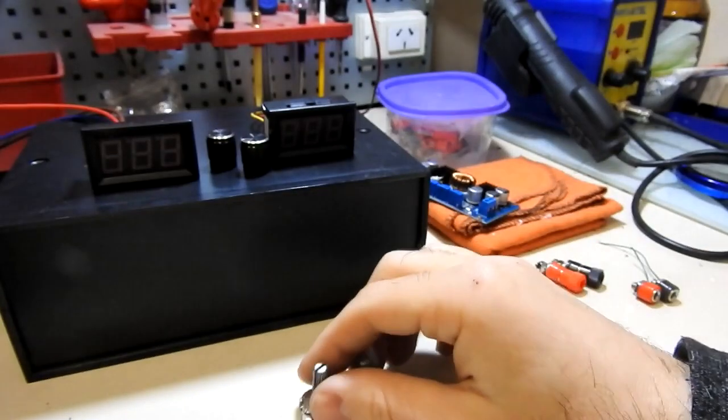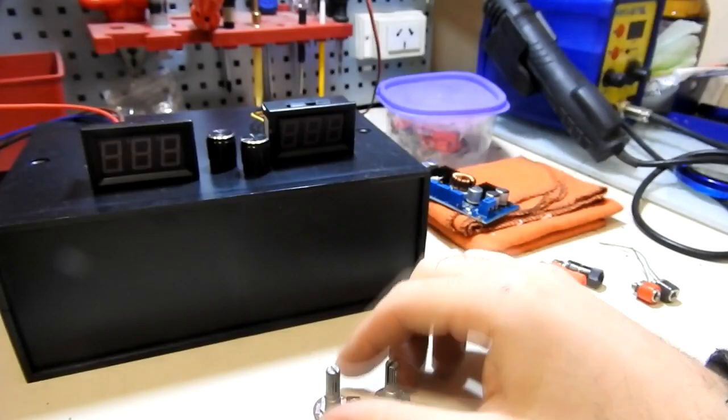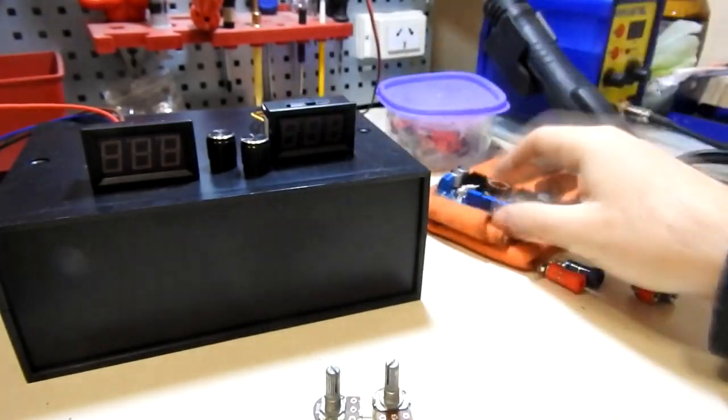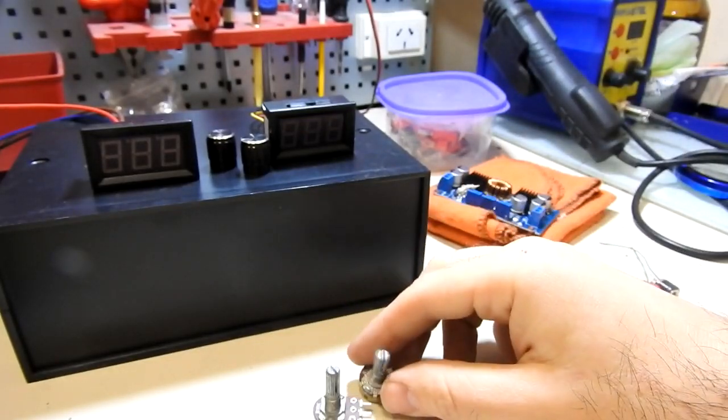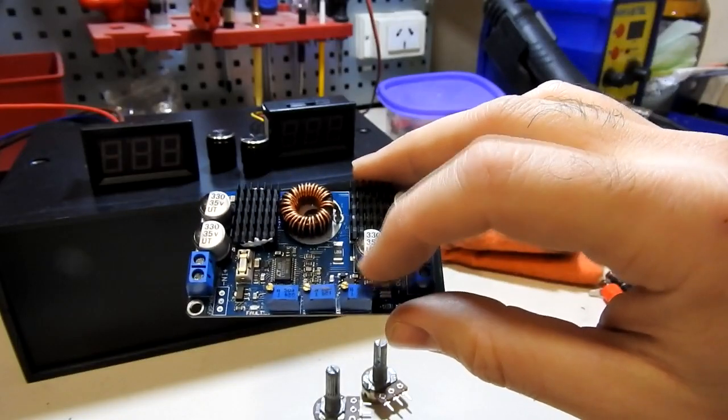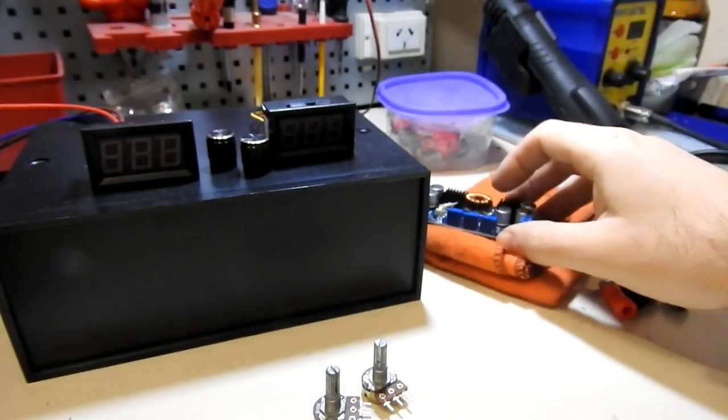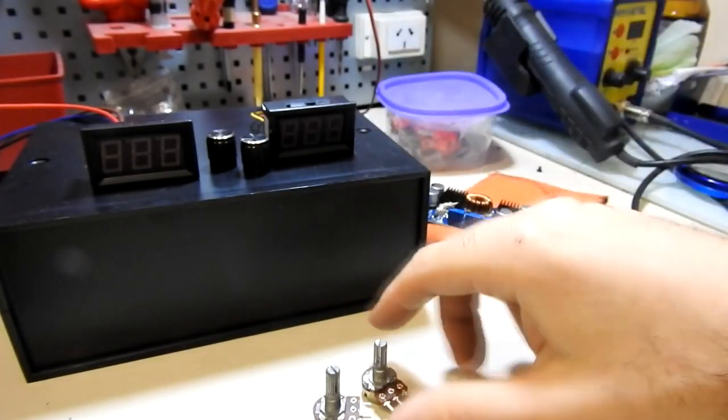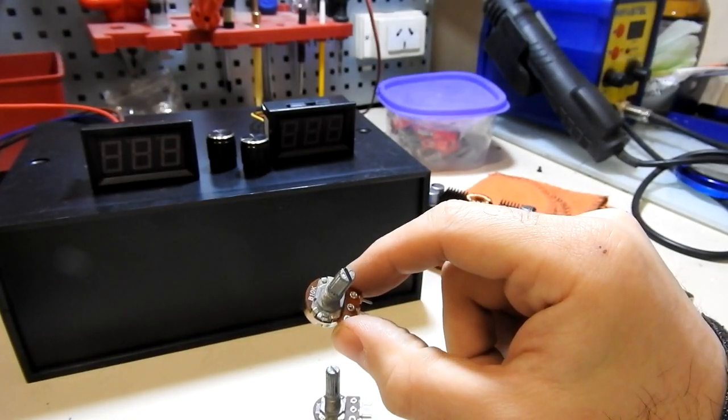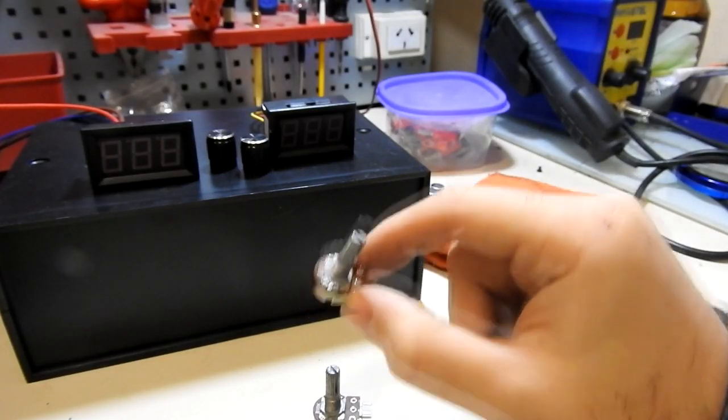Los potenciómetros que vamos a utilizar, posiblemente sean estos. Estos son de 10K. Normalmente estos potenciómetros multivueltas son de 10K. Si no, vamos a tener que buscar un potenciómetro. Si esto fuera de 100K, vamos a tener que buscar uno de 100K. Si fuera de 50K, vamos a tener que buscar uno de 50K. Poner el mismo para lograr las vueltas necesarias a la hora de regular.